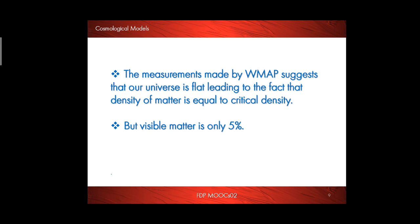The measurements made by WMAP suggest that our universe is flat, leading to the fact that density of matter is equal to critical density. But visible matter is only 5 percent, where is the other rest? It must be either dark matter or dark energy.